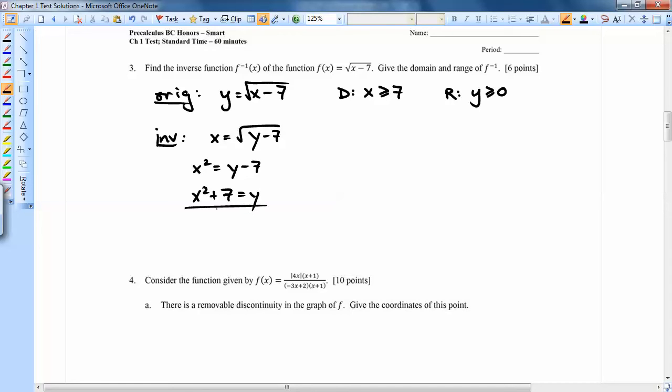and this is our inverse function. Now really, I created the y. There's no y originally given, and it says give f inverse. So I'm going to just write f inverse x equals x squared plus 7. So here's my inverse.